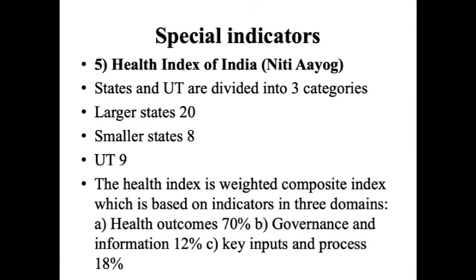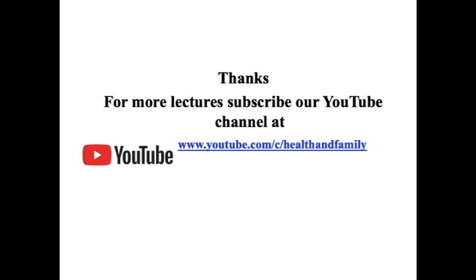The fifth special indicator is the Health Index of India by NITI Aayog, which has divided states and UTs into three categories: larger states (20), smaller states (8), and UTs (9). The health index is a weighted composite index including three basic indicators: health outcomes contributing 70 percent, governance and information contributing 12 percent, and key inputs and processes contributing 18 percent. Based on these, NITI Aayog ranks states and union territories.